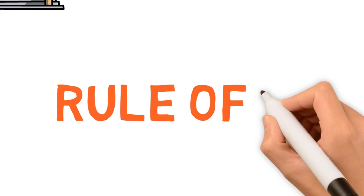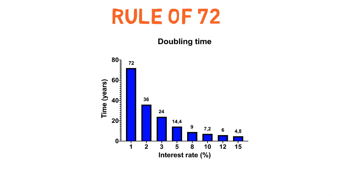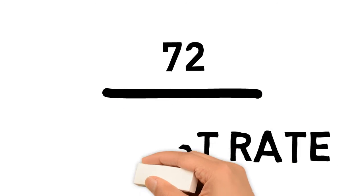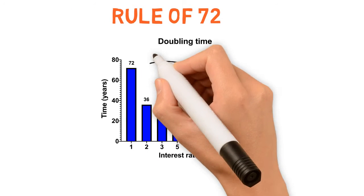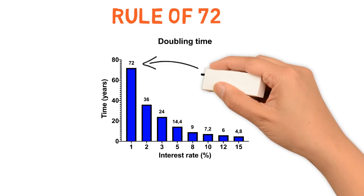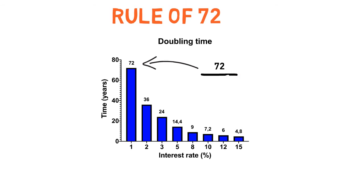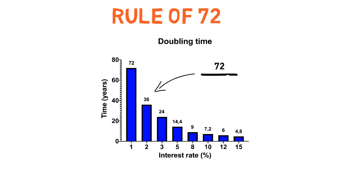A rule of thumb to quickly calculate the doubling time of an investment at a specific interest rate is the Rule of 72. You obtain the doubling time by dividing 72 by the interest rate in percentage. With a 1% interest rate, equivalent to many savings accounts today, it will take 72 divided by 1, which equals 72 years to double your money — and without taking taxation into account. At this rate, you'll actually lose money to inflation. With 2% (equal to current inflation) it takes 36 years, and with 10% (equal to stock market yearly returns) it takes just 7.2 years.